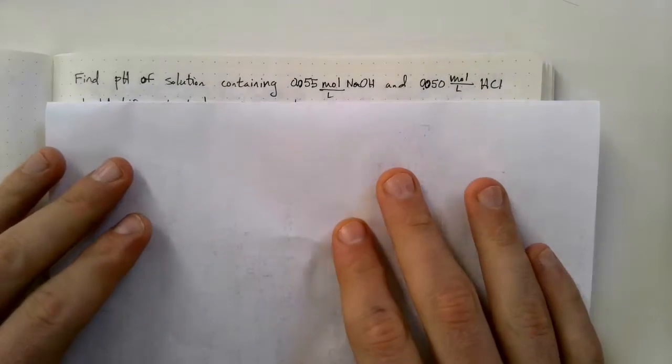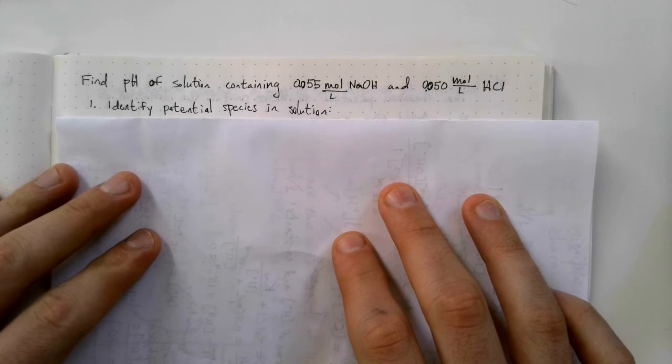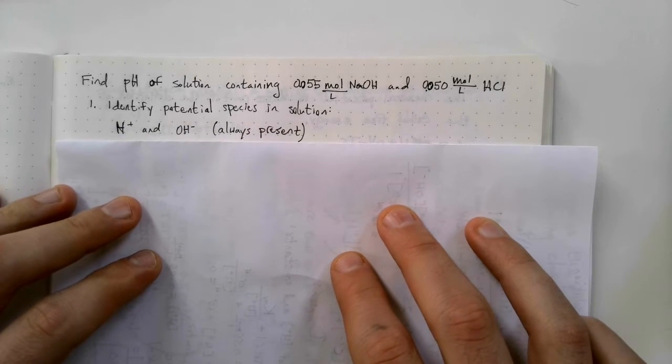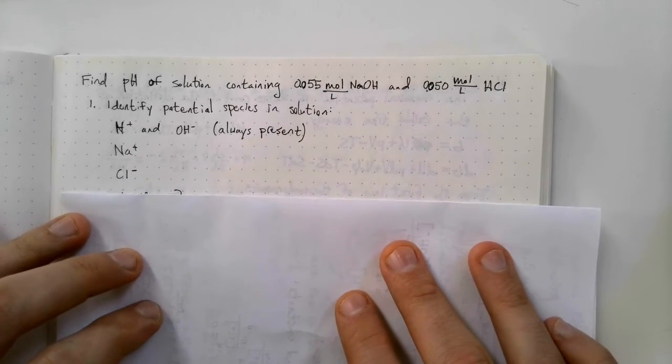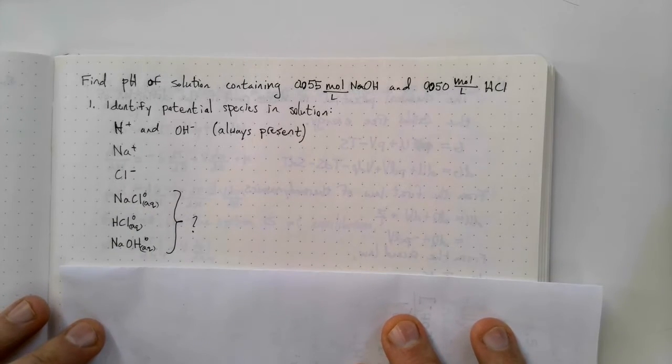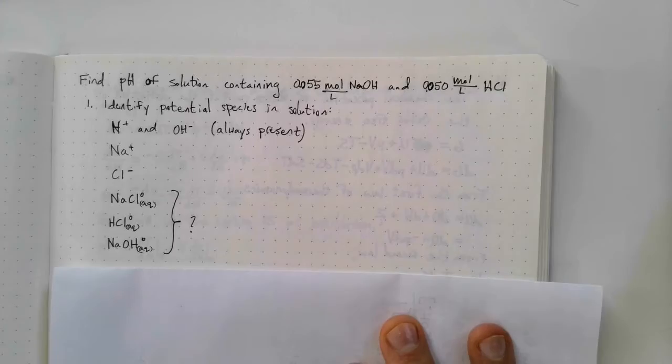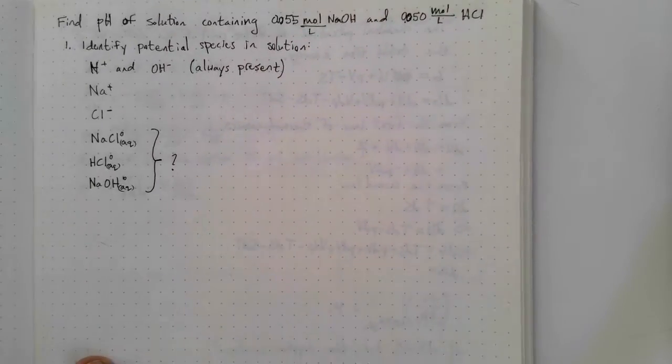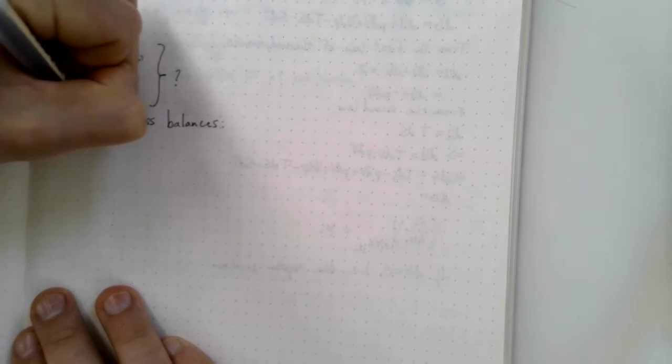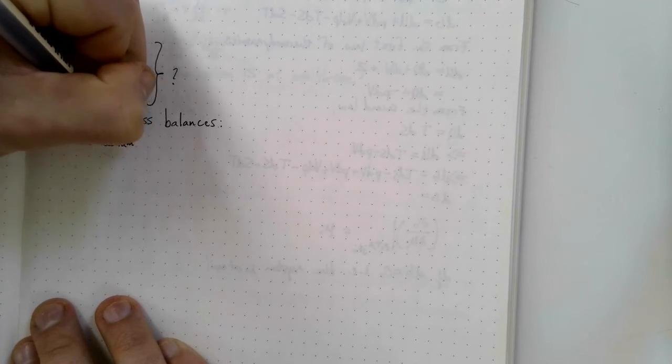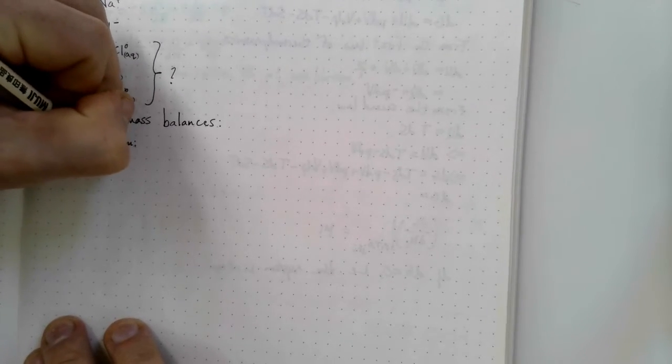The very first step whenever taking on a problem such as this one is to identify any potential species that are in solution. H plus and OH minus will always be present because water dissociates, and in this case you'll definitely have sodium and chloride ions as well. This brings us to the last class of species in solution which are dissolved species, that is they're not solids but dissolved, but potentially undissociated. These are NaCl0, which is a pair, a sodium chloride that are dissolved together, HCl0 and NaOH0, and I put a question mark there because as we'll see they are not significant contributors to this system.